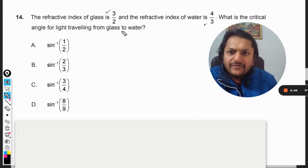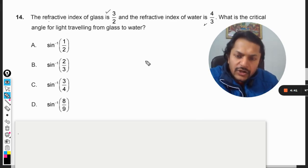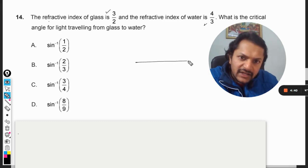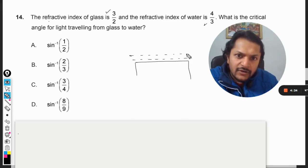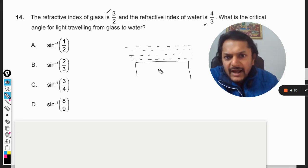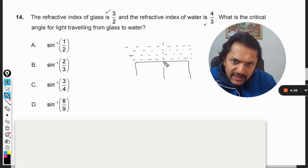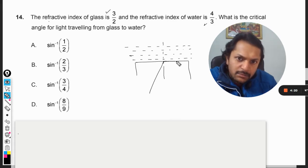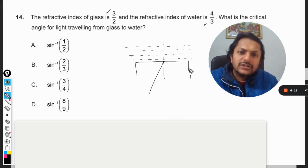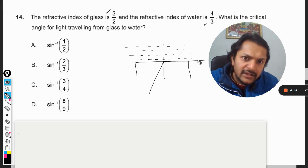So it means like let us say there is this glass slab here and there is water on the surface. Now on the surface like this the light is now hitting this surface like this and it must go like this because only then I can say that the light is hitting at the critical angle.